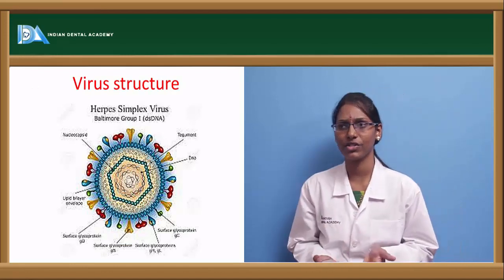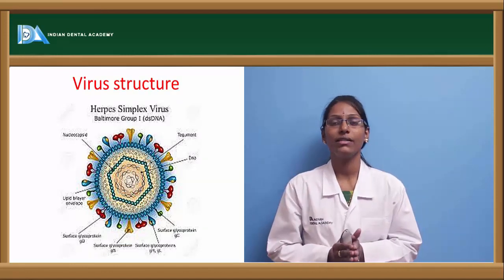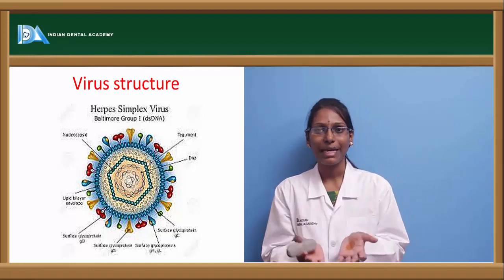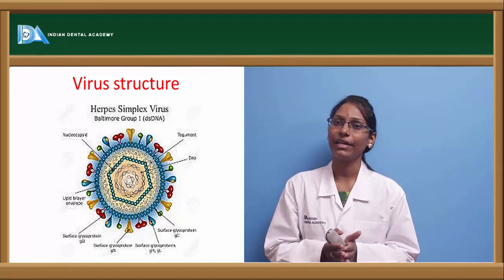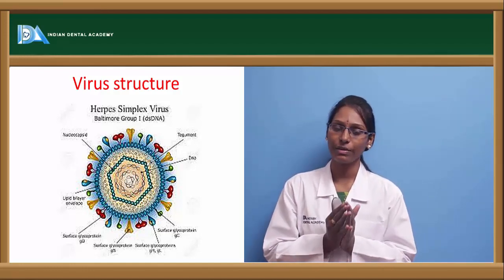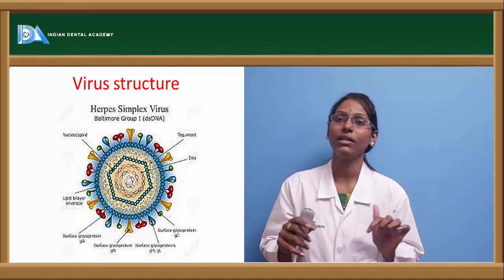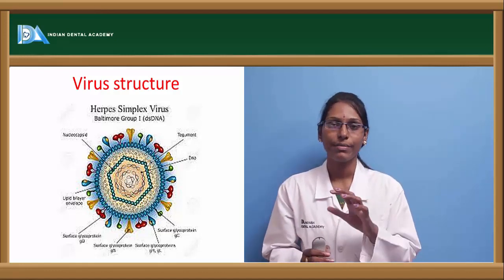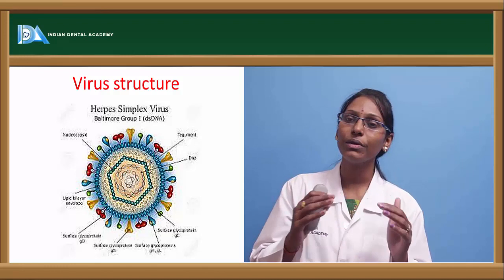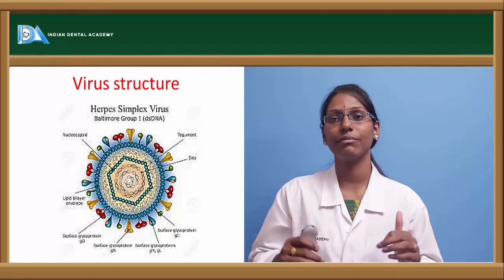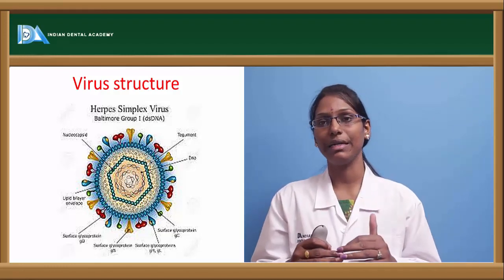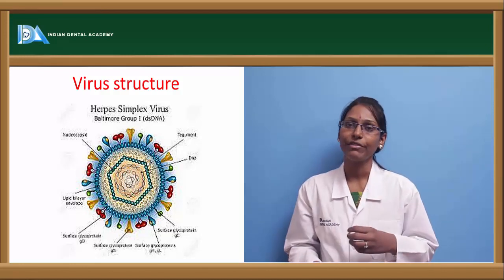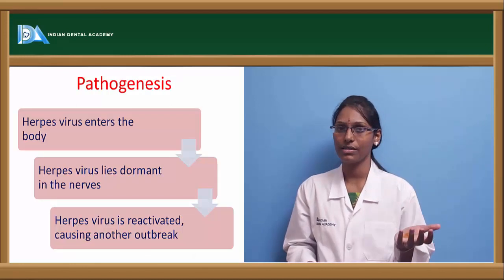Coming to the virus structure of HSV: it is an enveloped DNA virus with the DNA present within an icosahedral core. The outer layer is made up of lipid and has numerous glycoproteins emanating from this outer lipid layer, called ENV proteins, which are obtained from the host cell membrane.